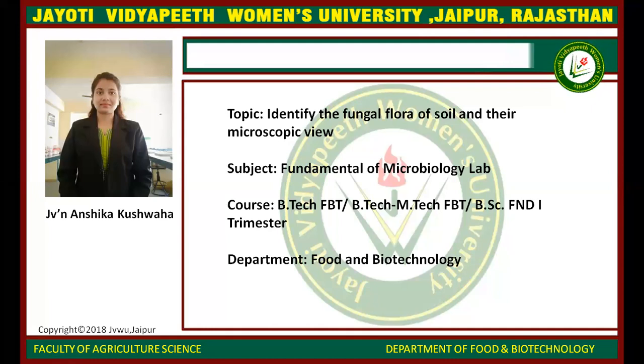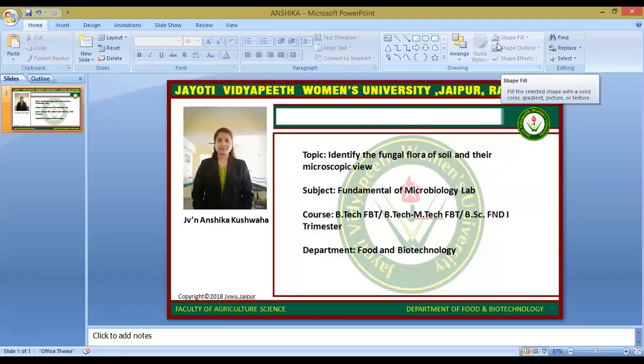We are starting with a technique known as serial dilution. A serial dilution is a step-wise dilution of a substrate in soil. Usually the dilution factor at each step is constant, resulting in a geometric progression of the concentration in a logarithmic fashion. Surface soils are a heterogeneous mixture of organic and inorganic particles that combine together to form secondary aggregates.